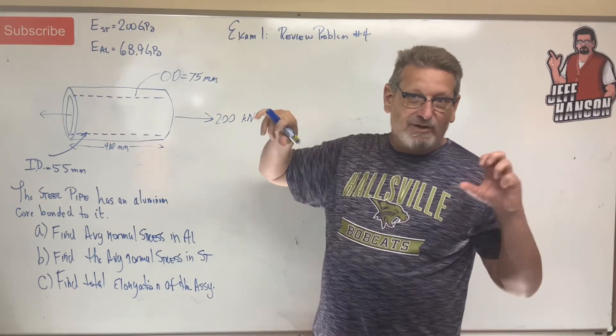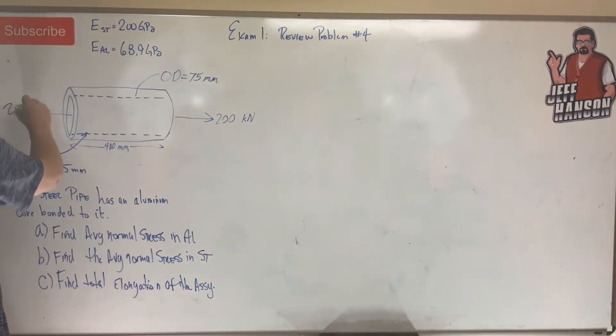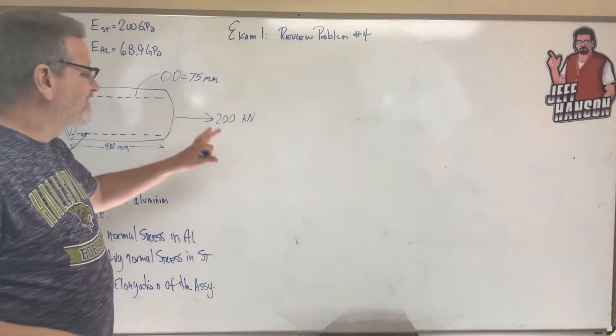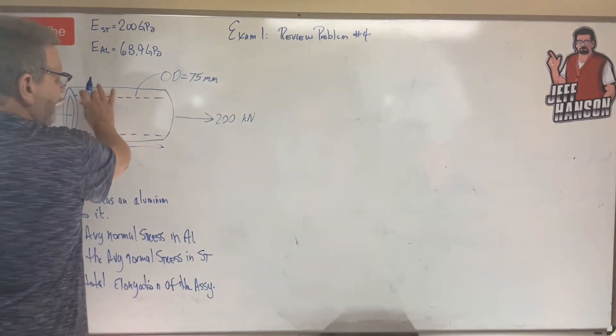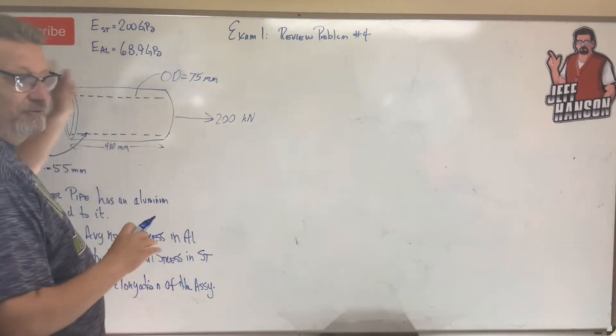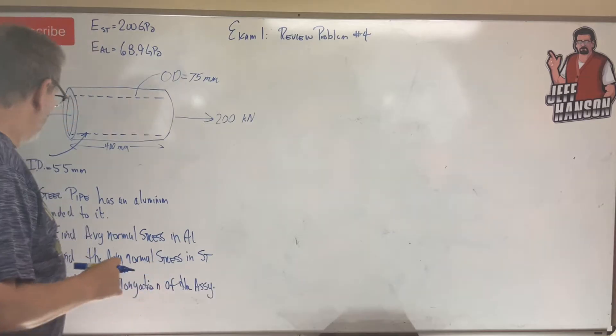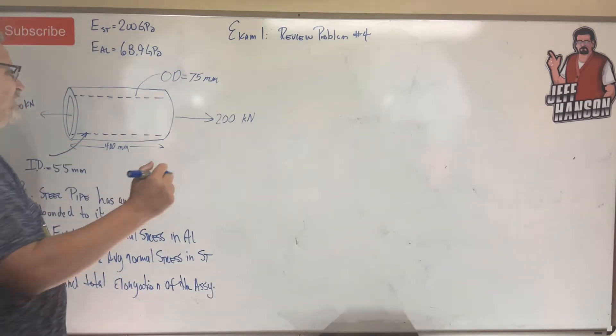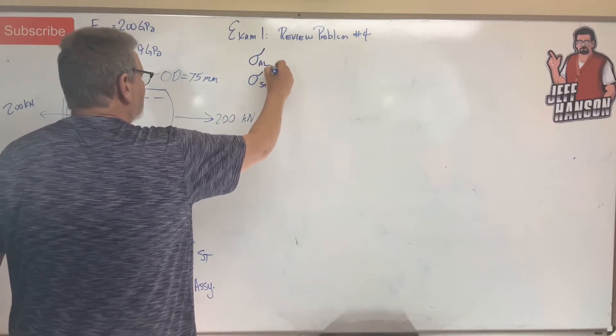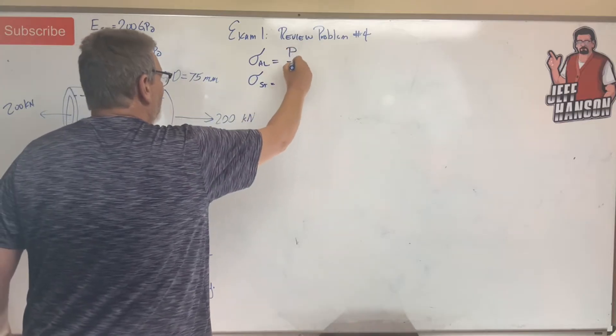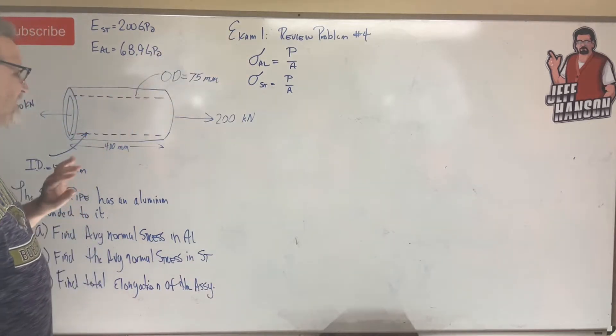We've got a steel tube, a sleeve with an aluminum core bonded to it. They asked us if it undergoes a tensile force of 200 kilonewtons. There's another one over here, isn't there? Does that make the tensile force 400 kilonewtons? No. Remember, if you cover it up and look at half of it, 200. That's the action force, that's the reaction force. So total force on that thing is 200 kilonewtons. Find the average normal stress, that's sigma, in the aluminum, and then find sigma in the steel.